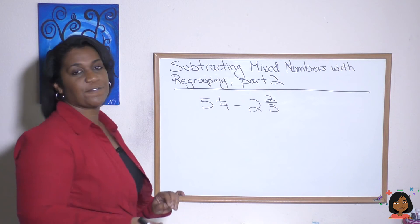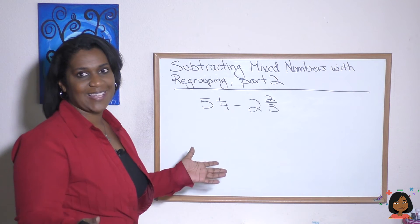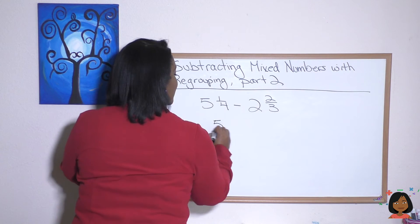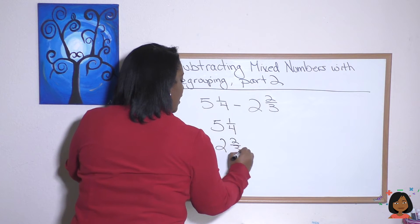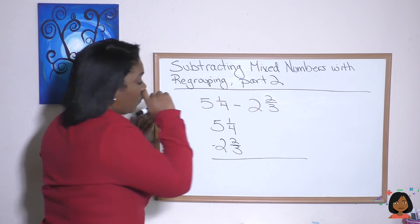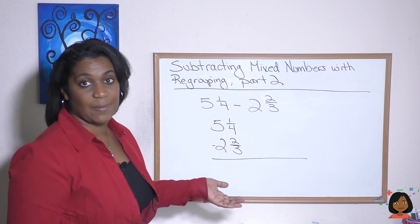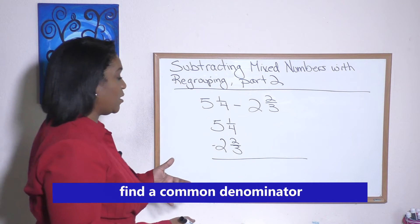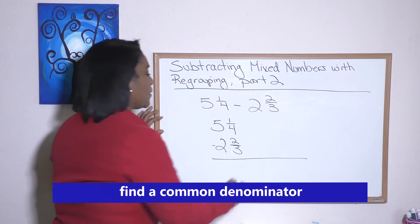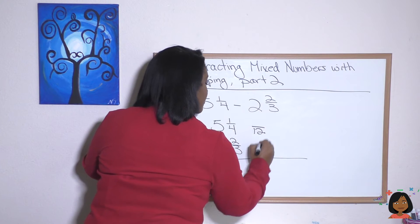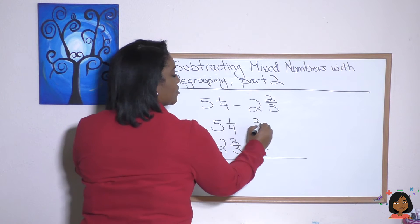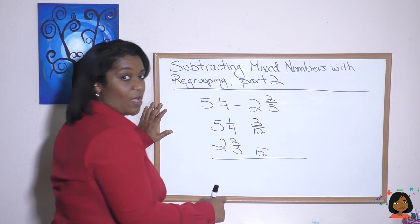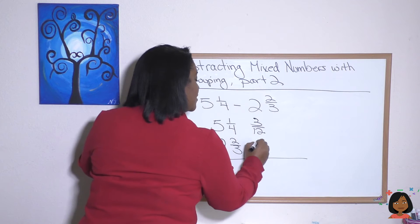So I have five and a fourth minus two and two thirds. I like to write it vertically because it's easier for me to see. So let me do that. And we're subtracting. Now we see we do not have the same denominator. So we need to find a common one. 12 is going to be the common denominator. So let's convert. Four times three is 12. One times three is three. Three times four is 12. Two times four is eight. Okay.